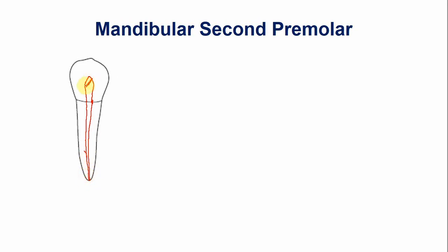In around 85% of the mandibular second premolars, a single canal is present. The variations are quite rare in the mandibular second premolars as compared to the mandibular first premolar.